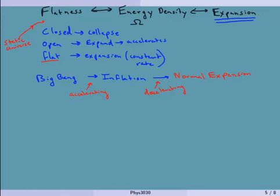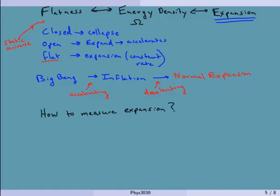As scientists, we want to corroborate this idea. We're assuming it's pretty flat and our expansion rate is pretty constant — but of course it wasn't always constant, so let's measure it. To measure expansion, we want to compare everything to the Hubble constant — capital H sub zero — which is how fast everything is moving.